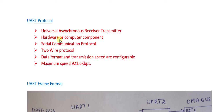UART is a serial communication protocol, meaning data is transmitted serially — one bit after the other at a time. This is why it is called a serial communication protocol. Additionally, UART is a two-wire protocol, meaning only two wires are required for this particular protocol, which makes it very simple.